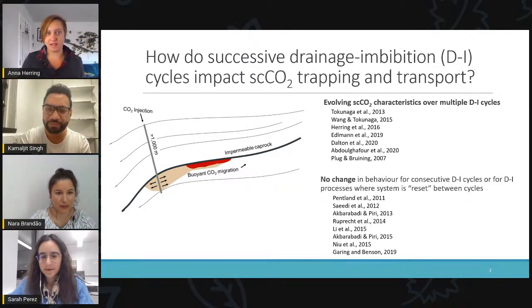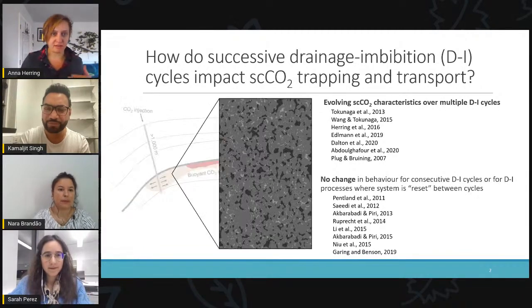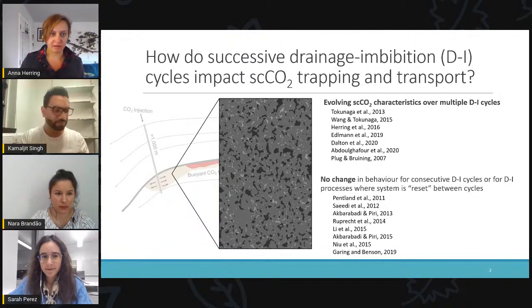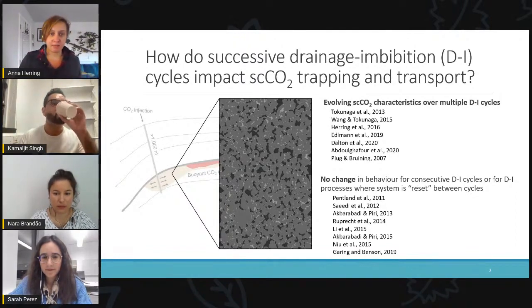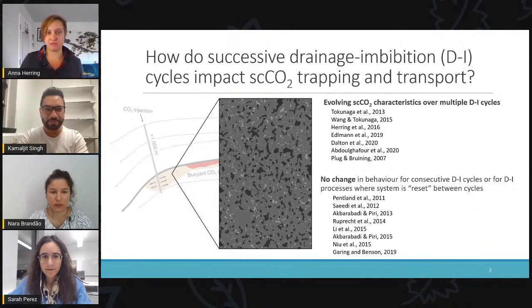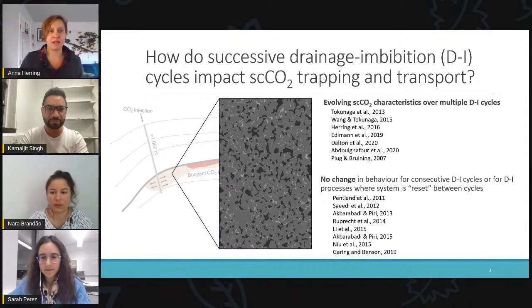CO2 displaces the resident brine in a drainage process. And then as the CO2 plume moves away from the injection point, brine will re-infiltrate into the rock in an imbibition process. And once you go through a drainage and imbibition cycle, there will be some small bubbles or ganglia of CO2 trapped by capillarity in the porous architecture of the rock. This is also called residual trapping. So depending on injection scheme, there may be regions of the rock that experience multiple drainage and imbibition events.